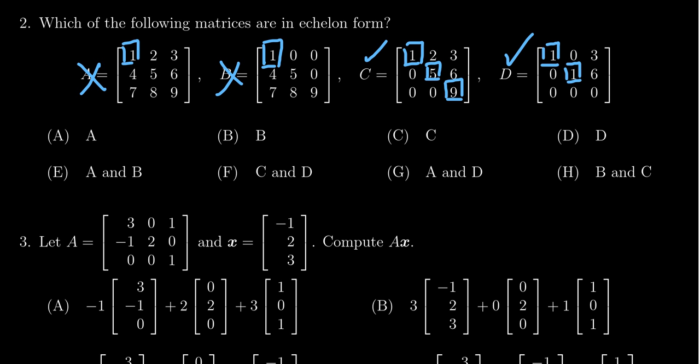That indicates the correct answer is both C and D, which is option F. I do want to mention that matrix D is in fact also in row-reduced echelon form. In addition to being in echelon form, both pivot positions are one and every number above a pivot is also zero. Row-reduced echelon form is in echelon form, so the fact that it's RREF doesn't disqualify it from being part of the answer — it's still in echelon form.